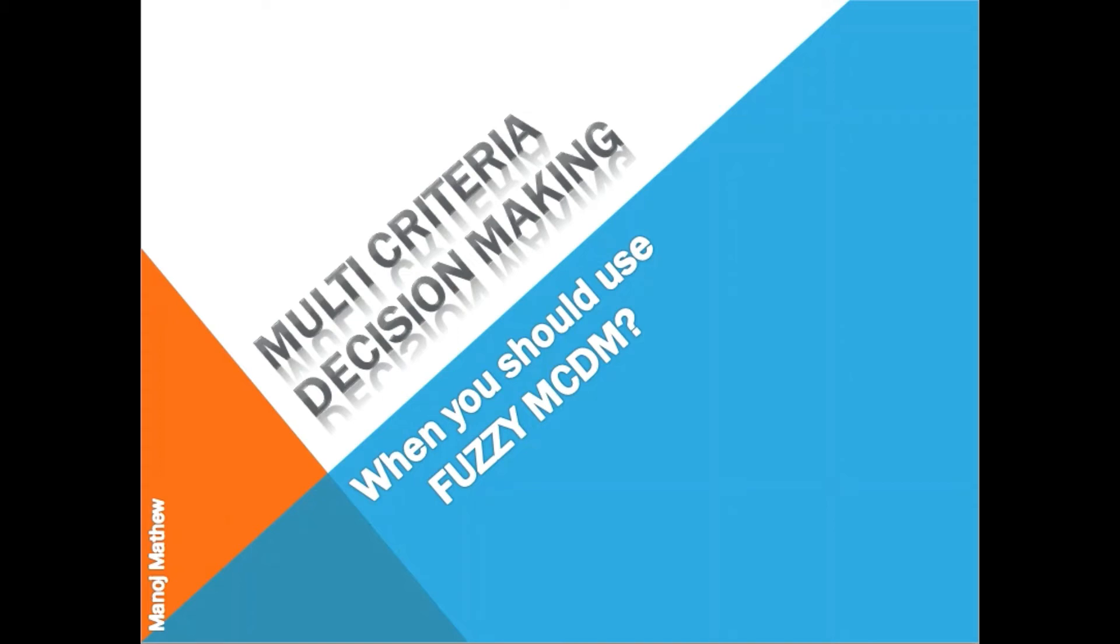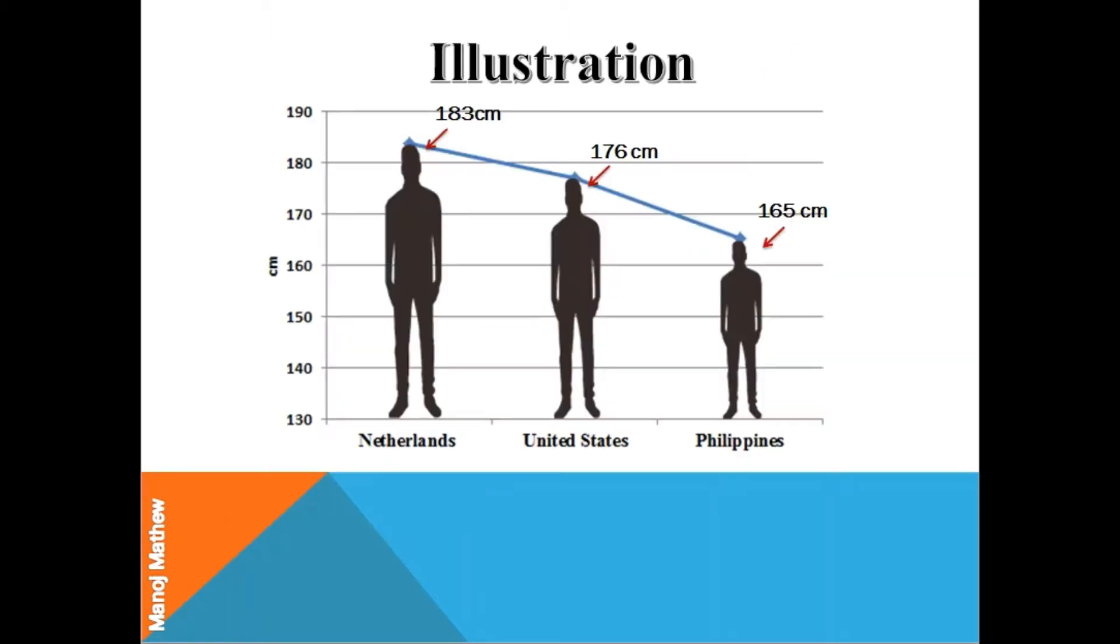Hello all. In this video, I will explain when you should use fuzzy MCDM. To explain this, I will use an example I took from Wikipedia, which says that the average height of a person in the Netherlands is 183 centimeters, whereas the average height in the United States is 176 centimeters, and in the Philippines it is 165 centimeters.